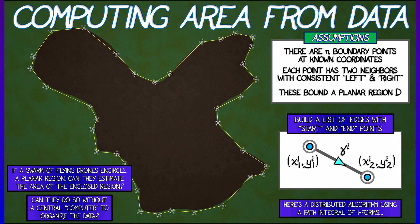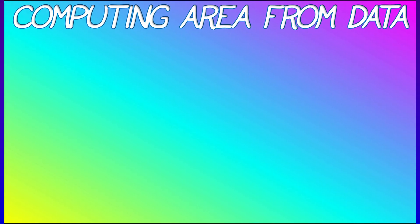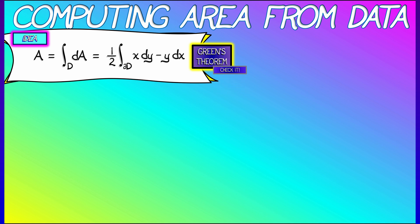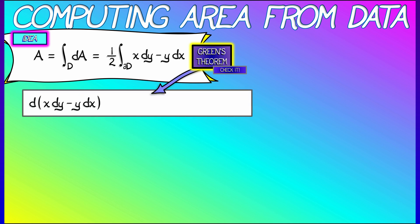Given that data structure, here is a distributed algorithm that estimates this area using a path integral of one-forms. This harkens back to an idea from chapter six. If we consider the area of domain D — what you get by integrating the area two-form over the interior — Green's theorem says we can replace that with an integral over the boundary of a certain one-form. We'll use ½(x dy − y dx). Let's verify: differentiating that one-form gives dx∧dy − dy∧dx, which equals twice the area form dx∧dy — that's why we have the one-half out front.